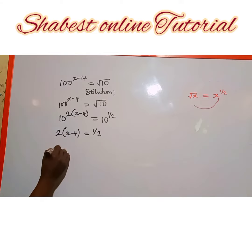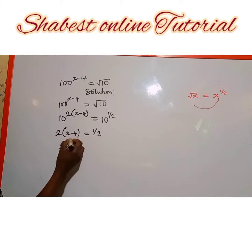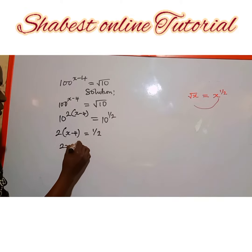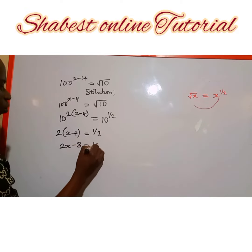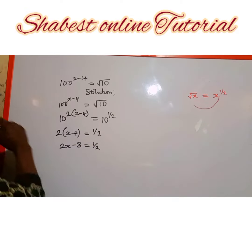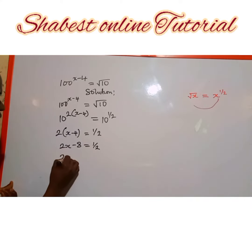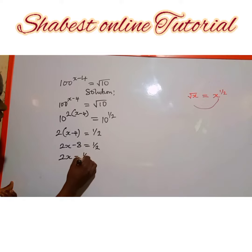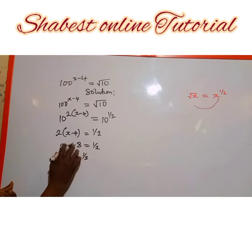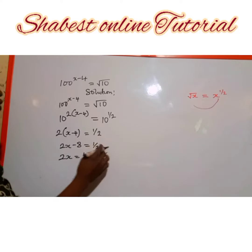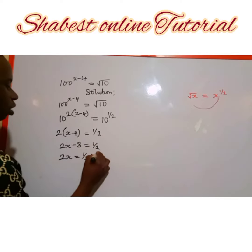Let's open this bracket: 2 multiplied by s gives 2s, then 2 multiplied by minus 4 gives minus 8, which is equal to 1 over 2. So collecting the like terms, we have 2s equal to 1 over 2, and this negative 8 crosses the equality sign to become positive 8.